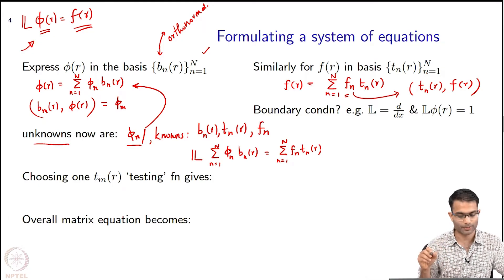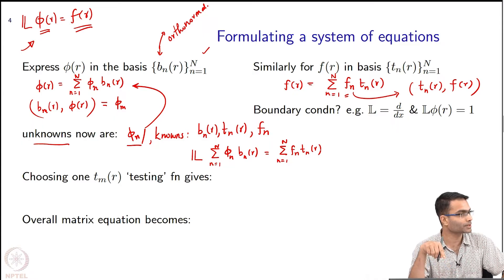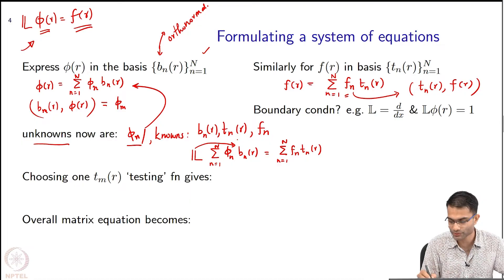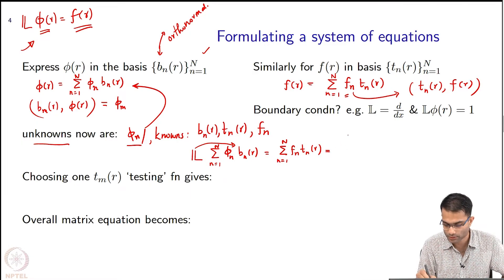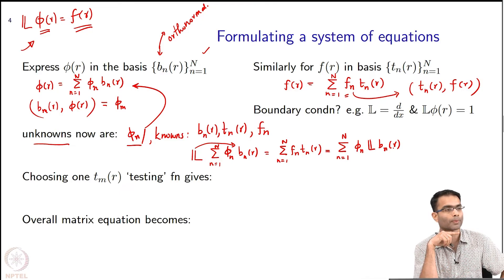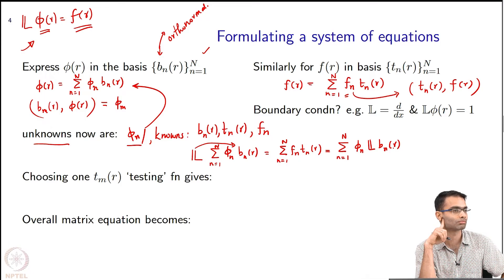Here is what the method of moments prescribes. To get a system of equations for φ_n, L will go inside the sum because φ_n is a number. So this becomes: summation over n of φ_n times L b_n(r). Now L is acting on a known basis function. But I want a system of equations — this does not look like one yet. I have N unknowns (the φ_n's) but I do not yet have N equations.